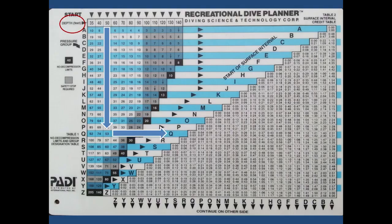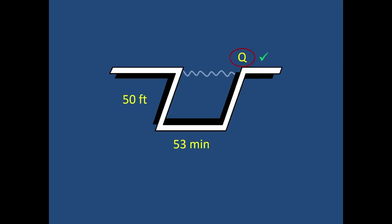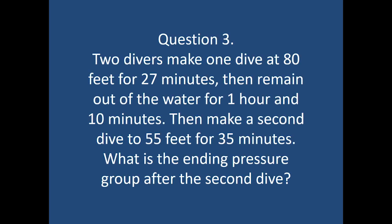Naturally we're going to start on table number one. Find the depth in this case 50 feet. We're going to move down the column. Find the time 53. Follow the arrow to the right and you will find the letter Q and that is the pressure group and that is the answer to that question. Please write it down and let's move into question number three now.